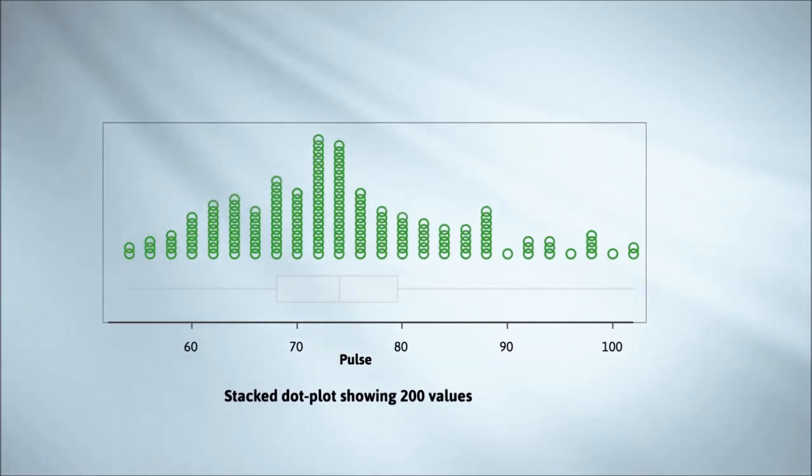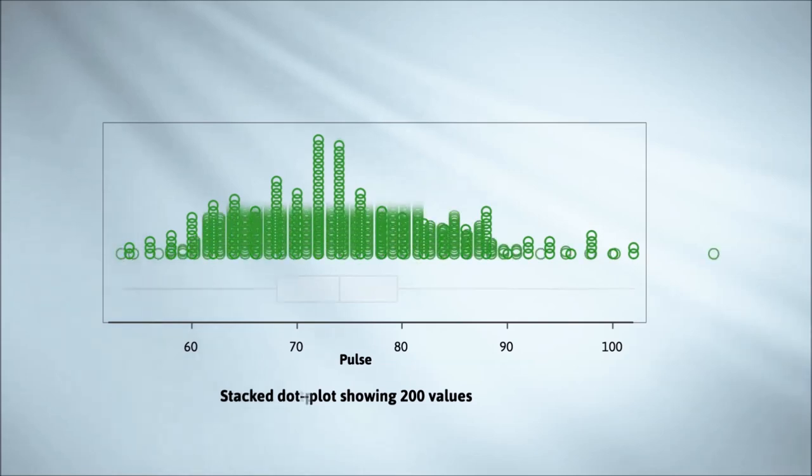At 200 data points with the plotting window being used here, there isn't room to stack them one on top of another because we'd run out of vertical space. Instead we overlap them just enough so that the highest stack still fits in the available space. By the time we get to the first 1000 data points, the only individual dots that we can see are those at the extremes where very few instances occur.